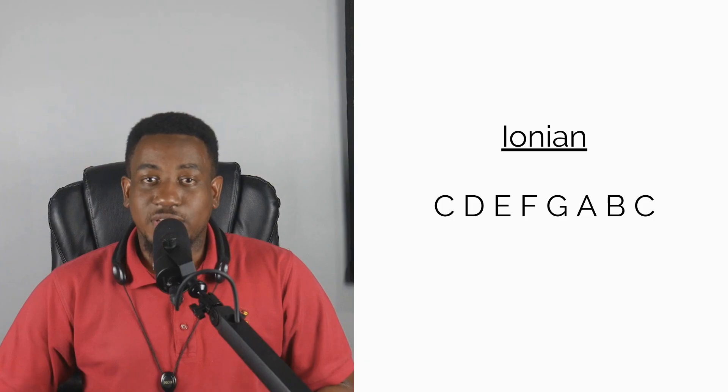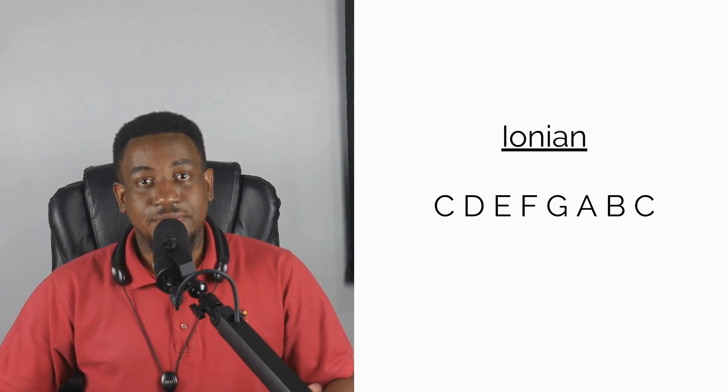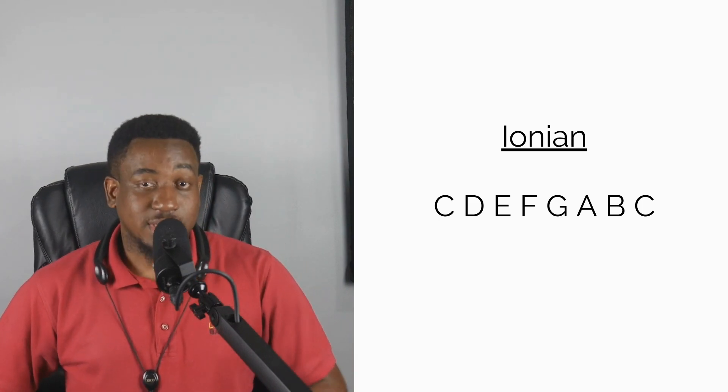The first mode is called the Ionian mode. This mode is basically the major scale. So if you know your major scale, you already know the Ionian mode. If we're in the key of C, that'll be C D E F G A B C.